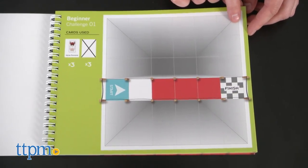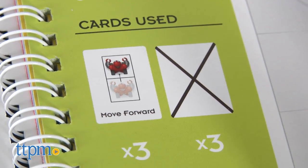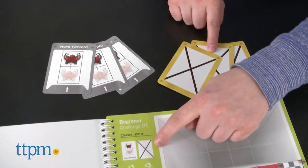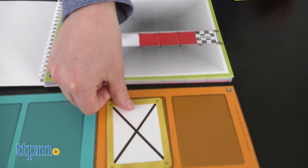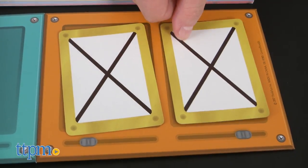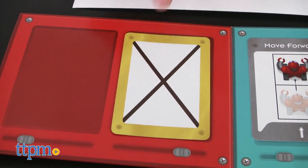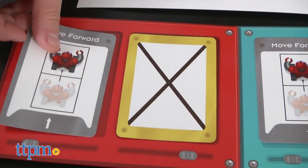So to play, select a challenge and the appropriate movement cards, then determine where to place the movement cards within the control panel and check your path against the solution booklet to see if your bot can travel safely from start to finish.